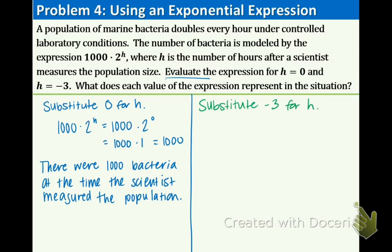Now we're going to substitute in negative 3 for h. And as we talked about earlier in this lesson, when we have a negative exponent, we're going to have to fix it by taking the reciprocal. So that means we have 1,000 times 1 over 2 to the 3rd. And 2 to the 3rd is 8. So 1,000 over 8. And that equals 125. So in application and expression of the situation, there were 125 bacteria three hours before the scientists measured the population.